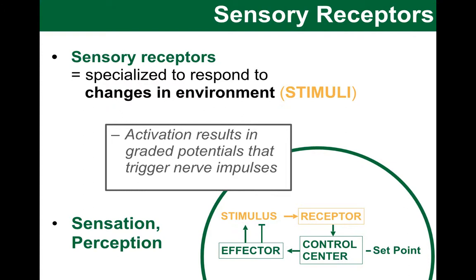Perception refers to the interpretation of the meaning of that sensation, and these occur in the brain — which was our control center. The big message here is that we only become aware and give meaning to the stimulus at the level of the brain.